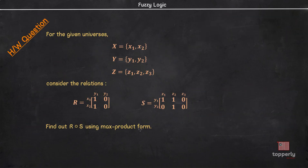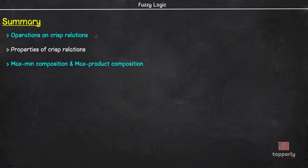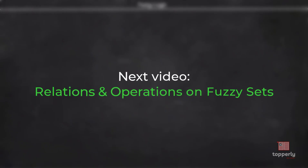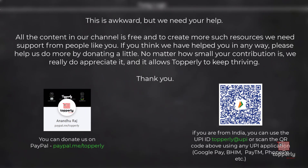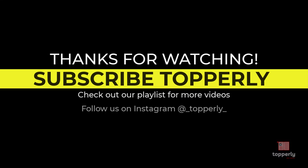Now let's end the lecture with a homework question. For the given universes X, Y, and Z, consider the relations R and S. Find R composition S using the max-product form. Once you find the answer, comment in the comment box to encourage others to solve it. To summarize, in this lecture we learned about operations on crisp relations, the properties they abide by, and the max-min and max-product composition with examples. If you have any doubts, feel free to ask in the comments — either me or another viewer will help you out. In the next video, we will learn about relations and operations on fuzzy sets. If you found this lecture useful, please like the video and subscribe to the channel. Thank you for watching Topperly and have a great day.